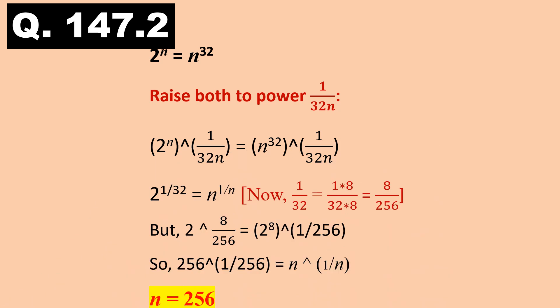Answer to question 147.2. 2 power n is equal to n power 32. Product of exponents is 32n. Raise both sides to power of its reciprocal. We get 2 power 1 by 32 is equal to n power 1 by n. 1 by 32 is equal to 8 by 256. 2 power 8 by 256 is equal to 2 power 8 whole power 1 by 256, which is 256 power 1 by 256. So, 256 power 1 by 256 is equal to n power 1 by n. Comparing, n is equal to 256.